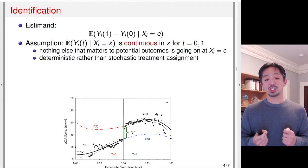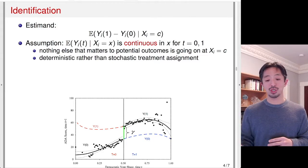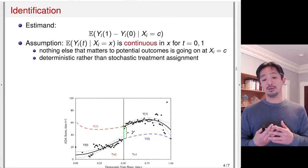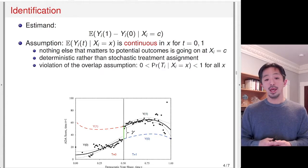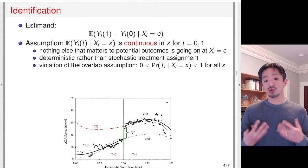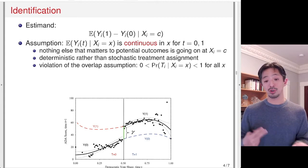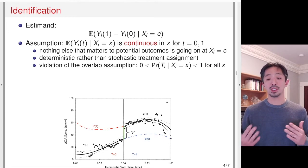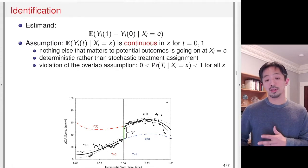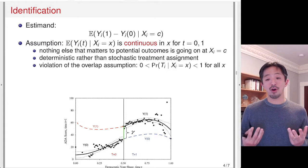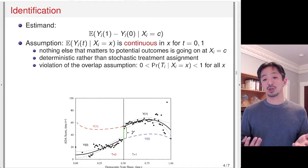What's interesting about this is that the treatment assignment is completely deterministic. Above 0.5, everybody is going to get treated, and below 0.5, nobody is going to be treated. This is actually a violation of the overlap assumption. The usual assumption in observational studies is that everybody has a non-zero probability of receiving treatment and a non-zero probability of receiving the control condition — there's some probabilistic assignment, some haphazardness in the treatment assignment conditional on a bunch of confounding covariates.